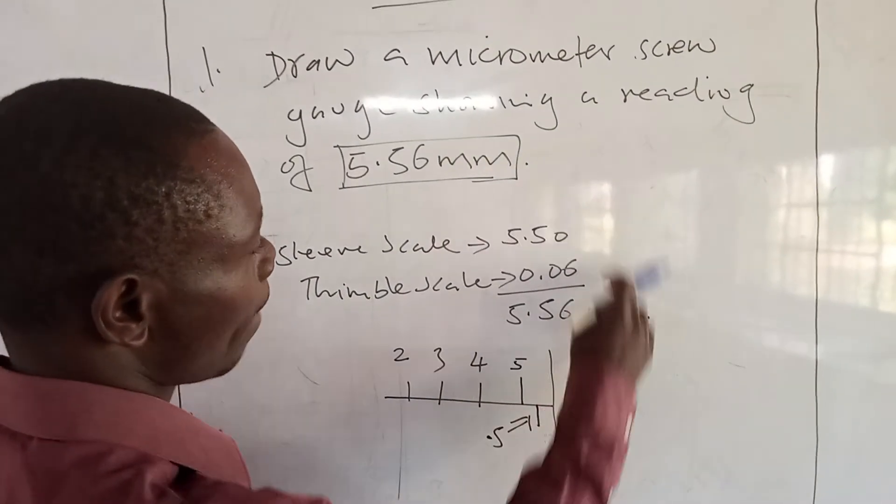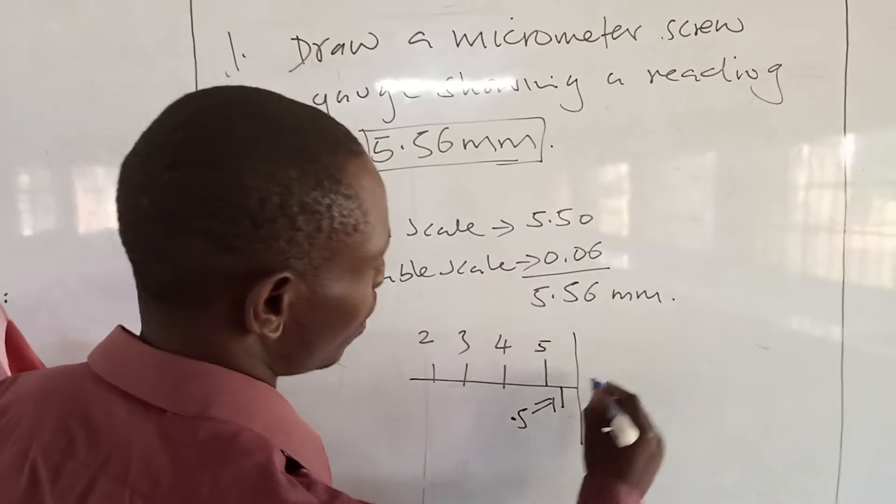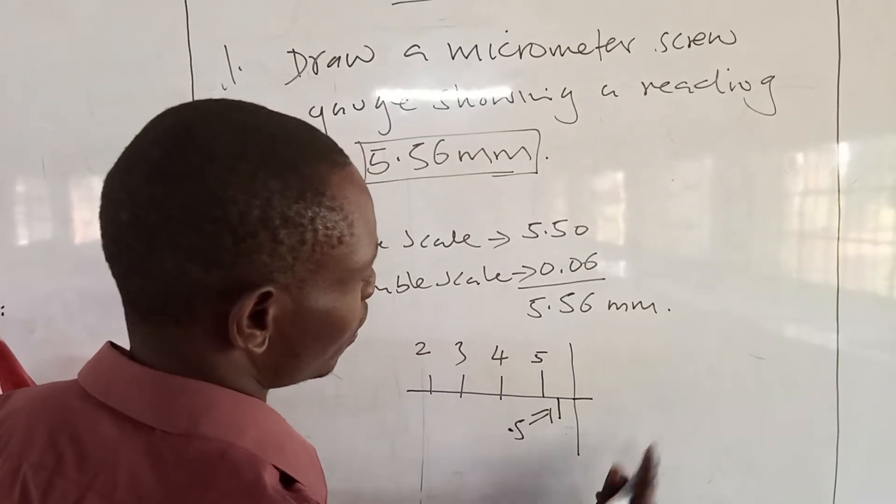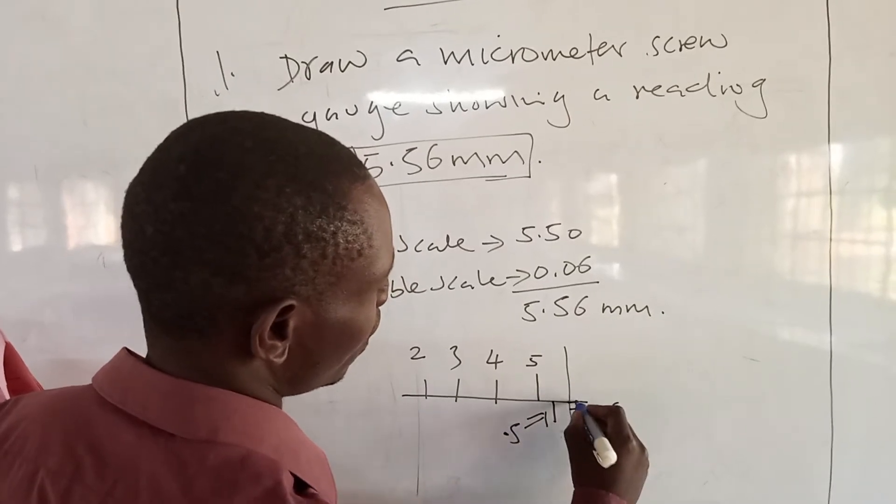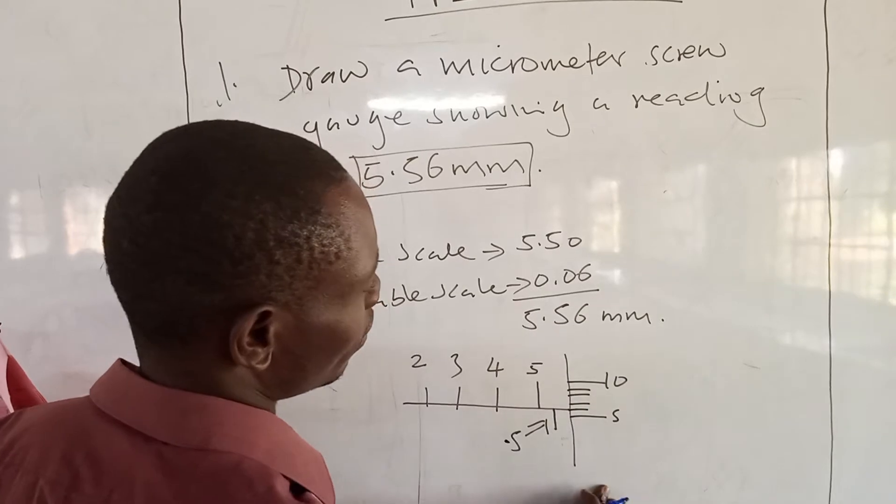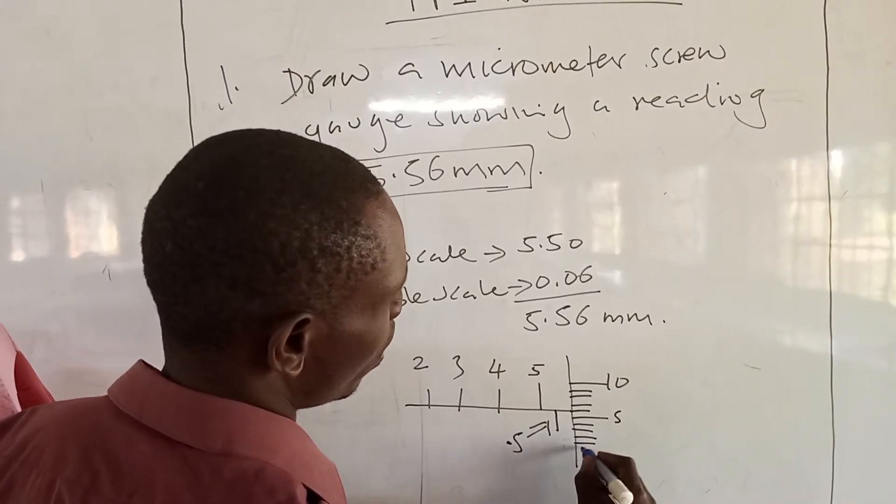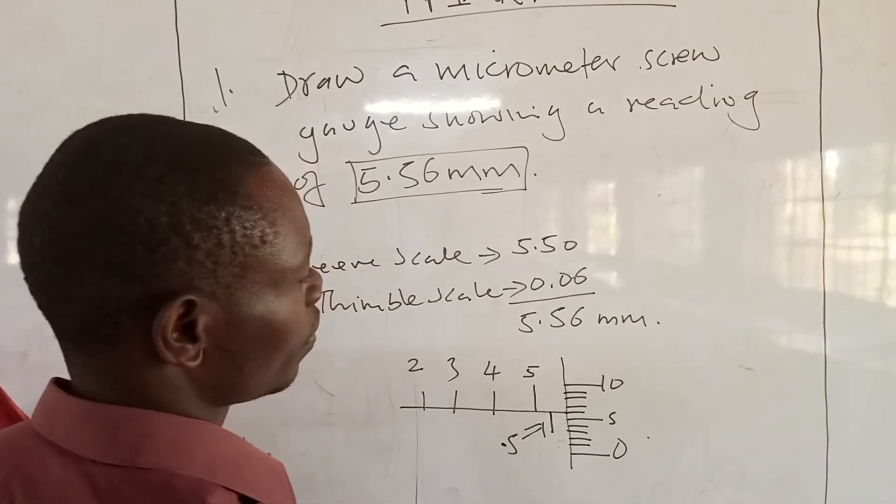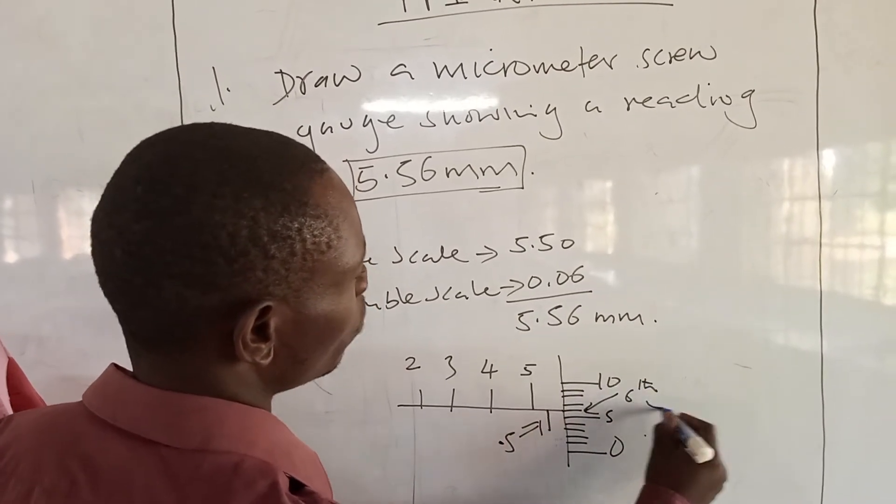On the sleeve scale, but then on the thimble scale we should have the sixth mark here, such that here is 5.5 and here is 6, meaning we'll have 7, 8, 9, 10, and then here we're going to have 4, 3, 2, 1, 0.